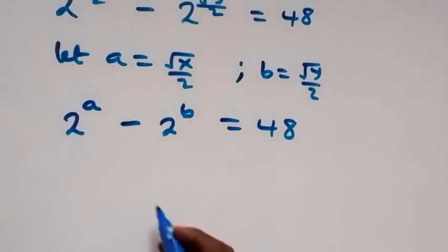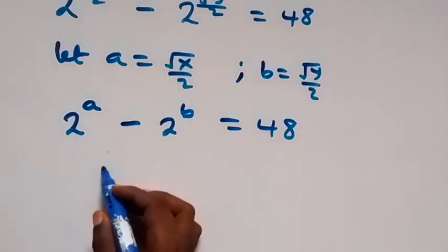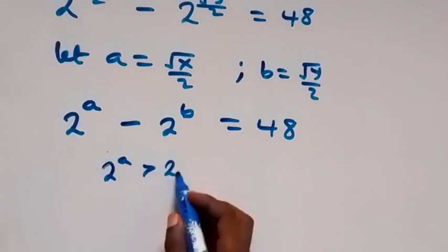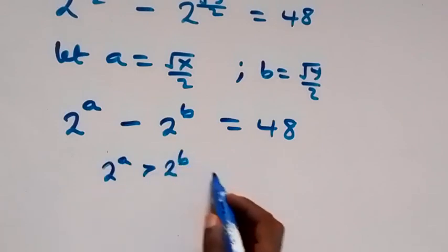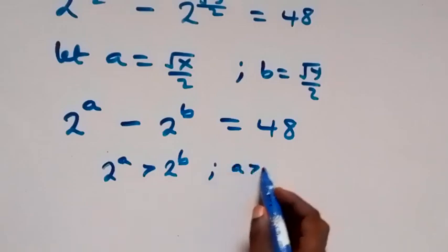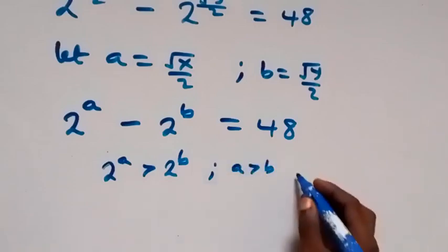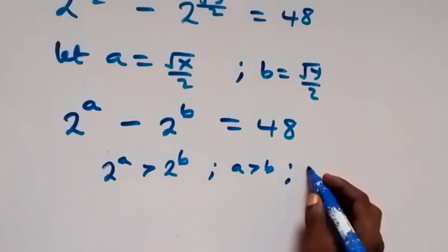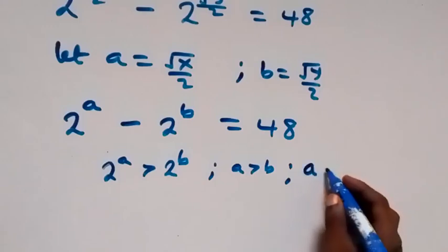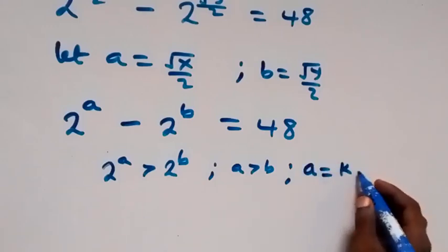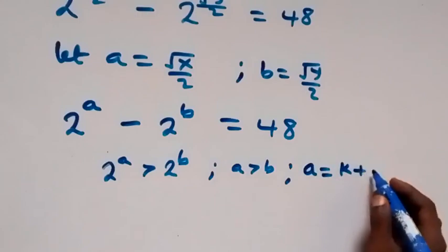From here, 2 raised to power a is expected to be greater than 2 raised to power b, which implies that a is greater than b. We can then represent a in terms of b by adding a constant: let a equal k plus b.